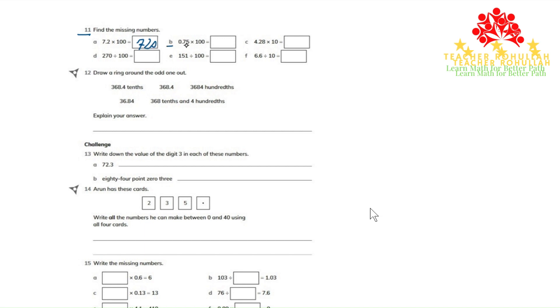In part B, we have 0.75 times 100. The answer will be 75 because the decimal point moves two places to the right.